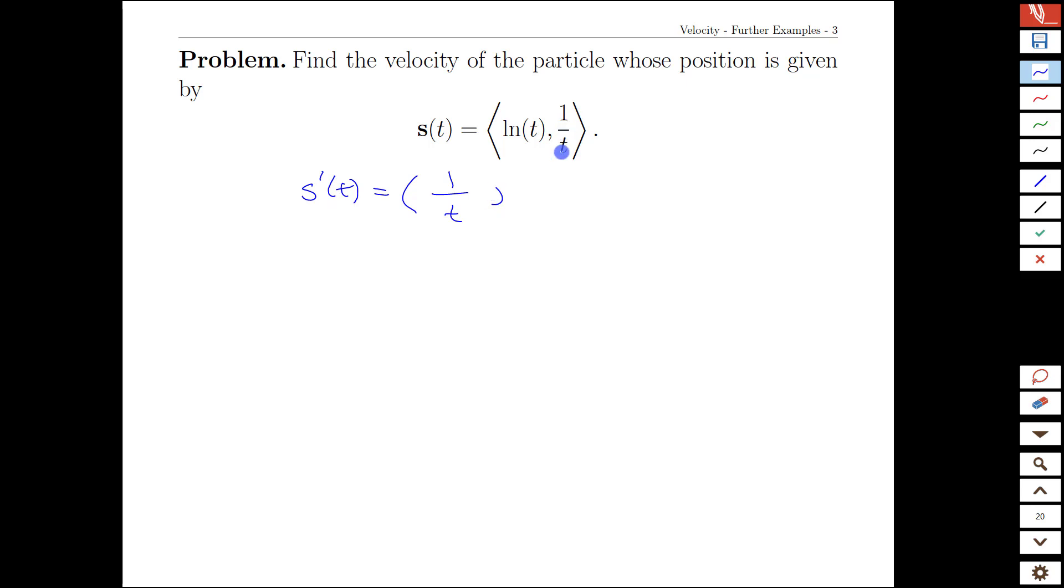And then remembering, wait, 1 over t, how does that work again? When possible, express your functions as powers. This is t to the negative 1, so the derivative is negative 1 times t to the negative 2. Bring the power down front, subtract 1 from the power.